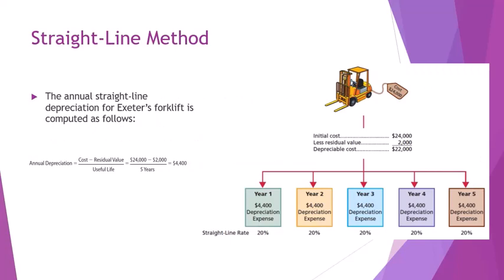The straight-line method is super simple. We take the cost minus the residual value — $22,000 — and divide by the useful life. That gives us $4,400 of depreciation expense recorded every year. So we record the exact same amount in year one, year two, year three, year four, and year five. At the end of year five, we will have recorded total depreciation of $22,000, which is the full depreciable cost.